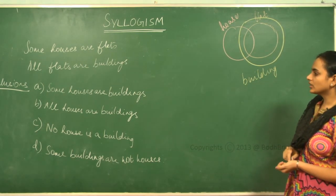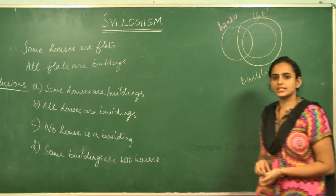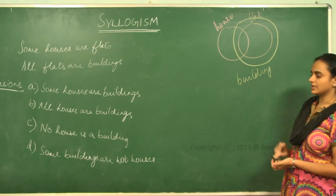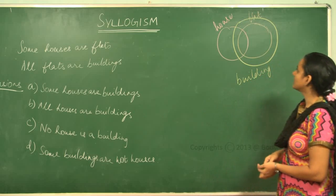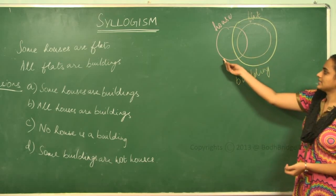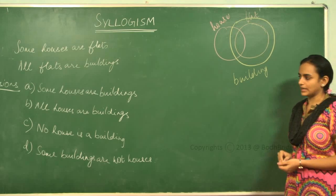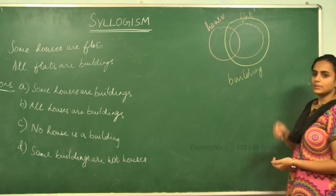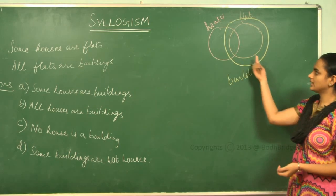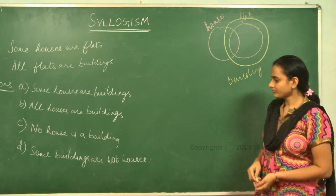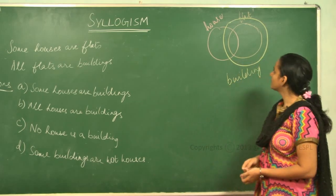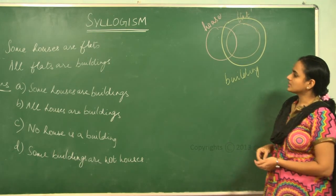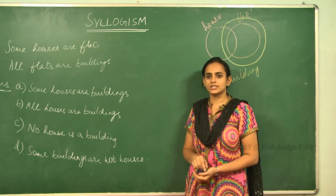So the conclusions are: some houses are buildings — yes, we can say that. All houses are buildings — no, all houses are not buildings. No house is a building — again, not true, as the entities are together. Some buildings are not houses — also not true. So the answer is the first option: some houses are buildings.